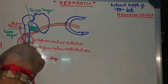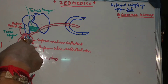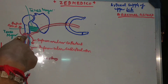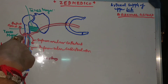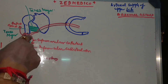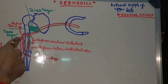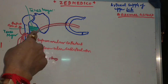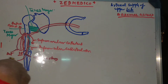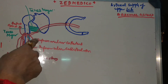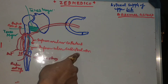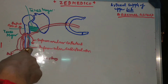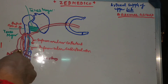The median nerve lies in close vicinity of the brachial artery, and the radial nerve lies in close vicinity of the profunda brachial artery. To summarize: the brachial artery's two terminal branches are the ulnar artery and radial artery; it gives superior ulnar collateral and inferior ulnar collateral arteries, all of which form anastomosis around the elbow joint.